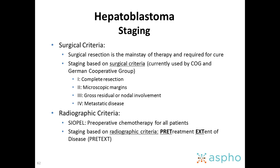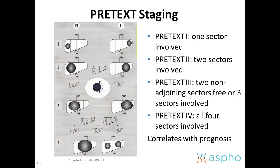We stage hepatoblastoma using either surgical or imaging criteria. Surgical resection is the mainstay of therapy and is required for cure. The surgical staging used mostly in North America and Germany uses stages 1 through 4 based on complete resection, microscopic residual, macroscopic residual, or metastatic disease. We are using more and more the radiographic PRETEXT criteria implemented by SIOPEL in Europe — pre-treatment extent of disease — which divides the liver into four sectors based on resectability and blood supply. PRETEXT 1 is one sector involved; PRETEXT 2, two sectors; PRETEXT 3, two non-adjoining sectors or three sectors involved; PRETEXT 4, all four sectors involved. This correlates with prognosis.